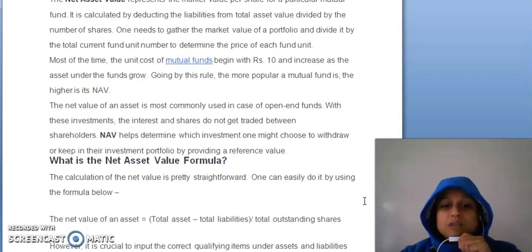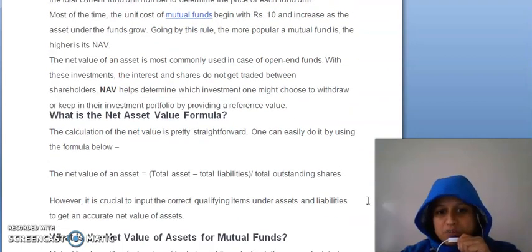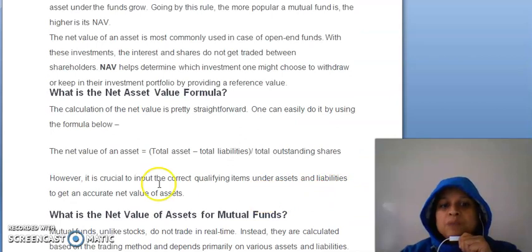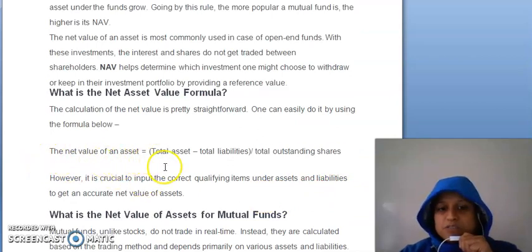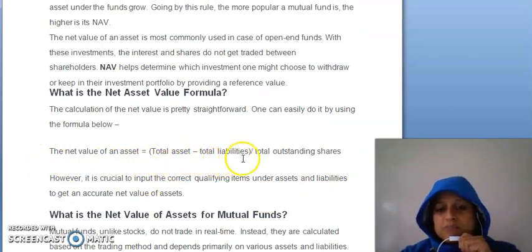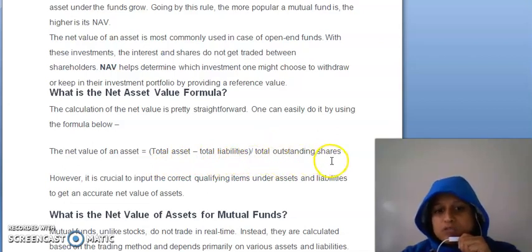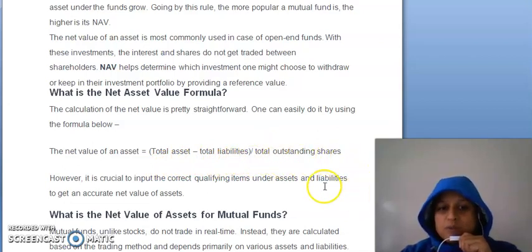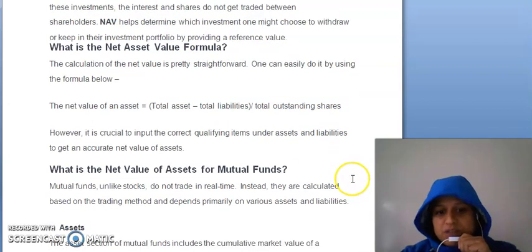Net asset value calculate karne ka formula kya hai? Net asset value of an asset ko calculate karne ka formula hai: total assets minus total liabilities, divided by total outstanding shares. Toh aapki nikal jayegi net asset value.